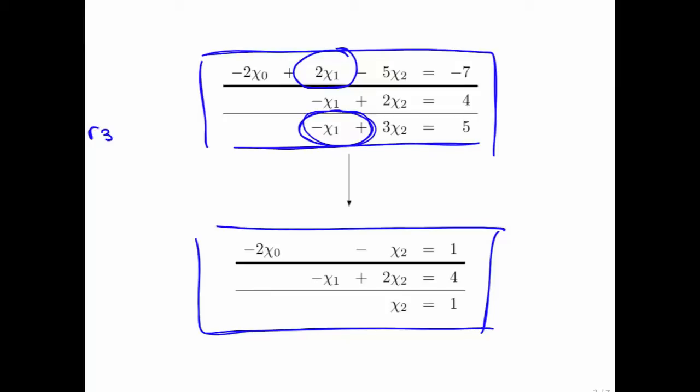Well, eliminating this term is a matter of taking row three and subtracting off one times row two. Eliminating this term is a matter of taking row one and subtracting off minus two times row two.